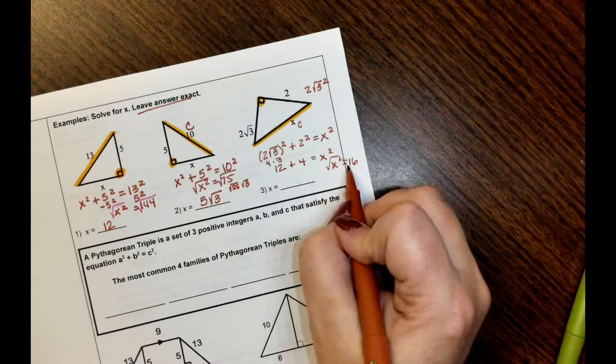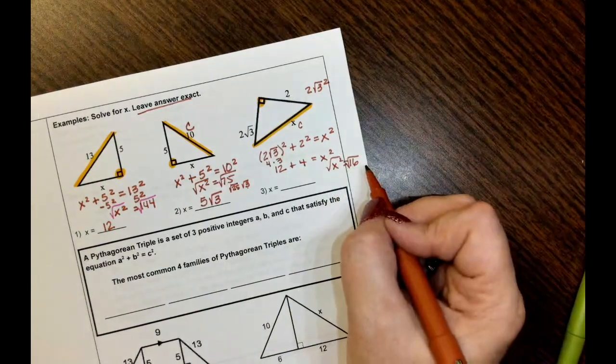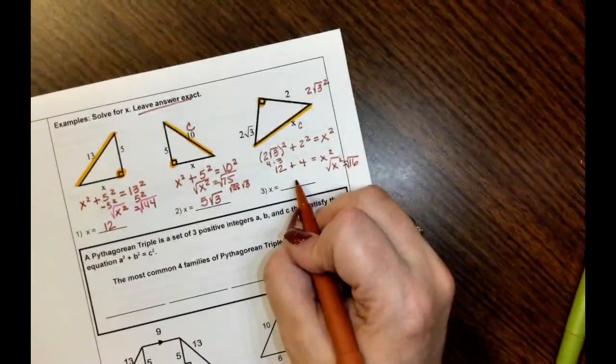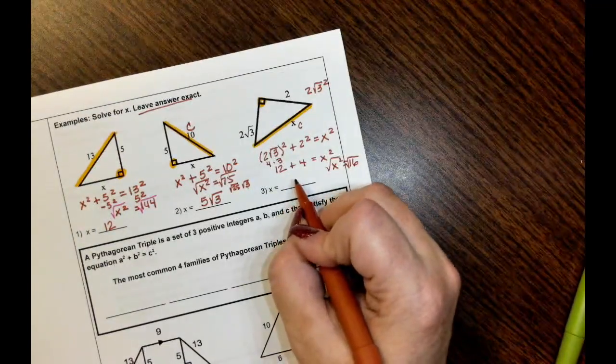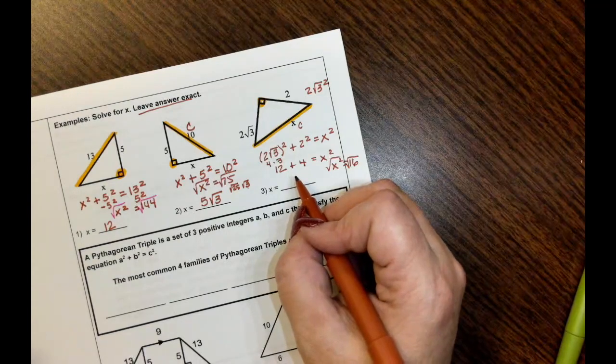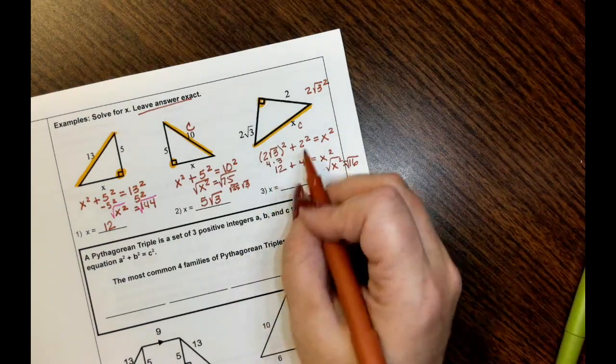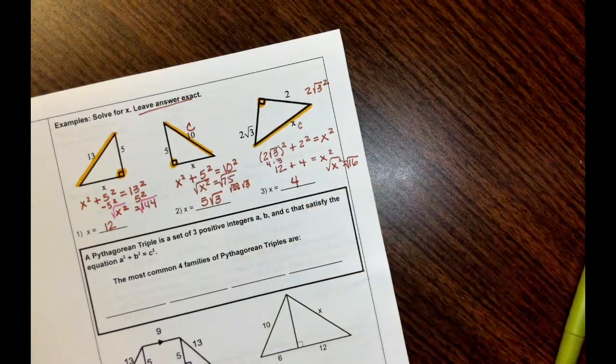Or if you take the square root of both sides, you get plus 16 or negative 16. Positive 16, negative 16. We don't need or excuse me, 4. Plus positive 4, negative 4. We don't need the negative because we can't have a negative side length. So the only one we keep is 4.